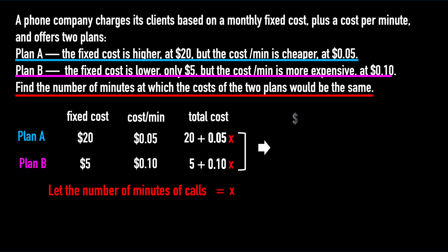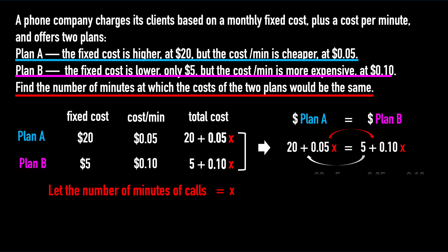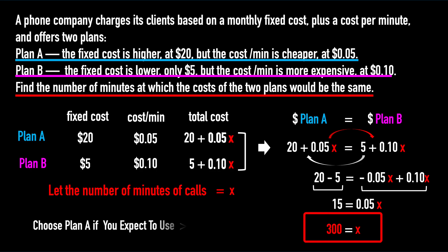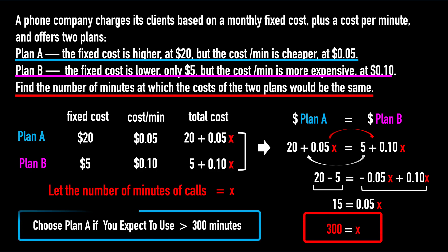The cost for Plan A is equal to Plan B. Let's express this relation as an equation and solve for X. X equals 300 — the two plans cost the same at 300 minutes. So, choose Plan A if you expect to use more than 300 minutes per month. Thank you.